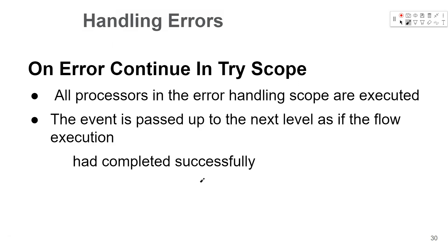When it comes to the On Error Continue scope, we can use it inside a Try scope. When we try to add a letter to the numbers, it will raise an error. However, the On Error Continue inside the Try scope will handle it and send success — it will not fail. On Error Continue is red in, green out, meaning the error is handled within that Try scope before continuing to the next element.